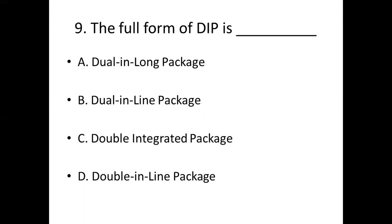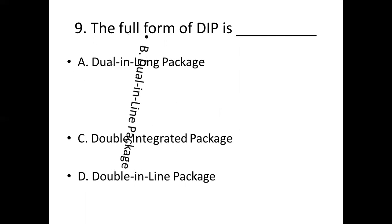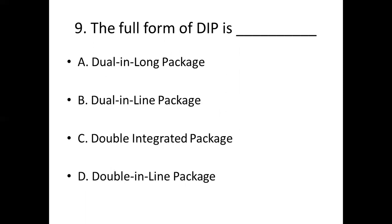Ninth bit: The full form of DIP is dash. Option A: dual in long package. Option B: dual in line package. Option C: double integrated package. Option D: double in line package. Answer: dual in line package.